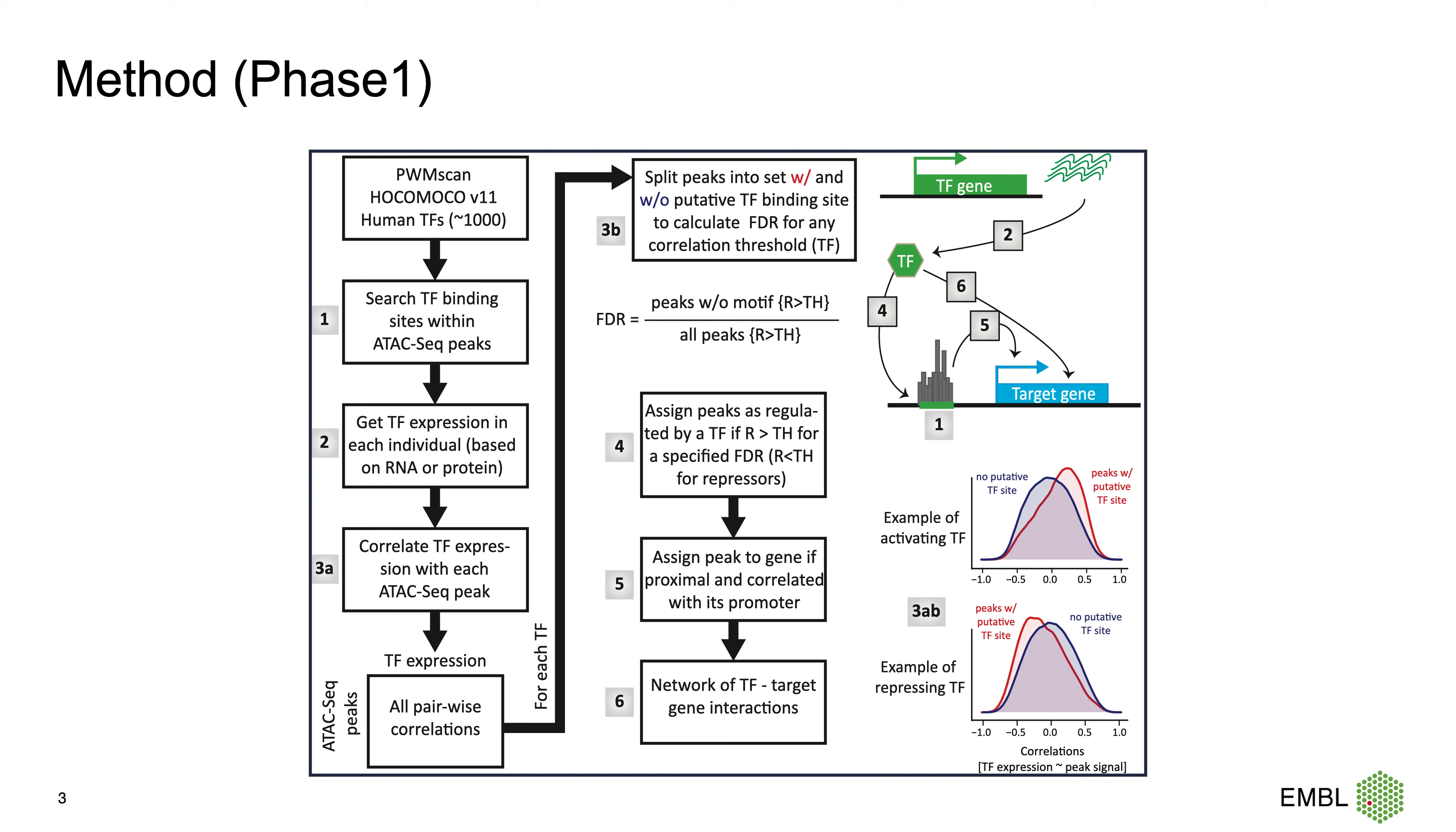Here is phase one of our method. We use HOKOMOKO version 11 and search for transcription factor binding sites within ATAC peaks. Then using the TF expression, we compute correlation between transcription factor and each ATAC peak across the individuals. We also compute FDR for this correlation and based on a specific threshold for correlation and FDR, we filter these connections.